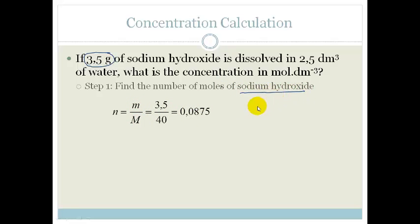Sodium hydroxide is NaOH. And if you look on your periodic table you will see that the molar mass of sodium is 23, plus the molar mass of oxygen is 16, plus the molar mass of hydrogen is 1, which gives us 40. And that's where we get this number. The molar mass of sodium hydroxide is 40. So the number of moles is mass over molar mass, which is 3.5 divided by 40, which is 0.075.